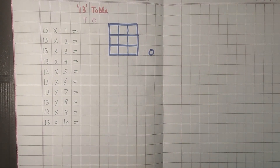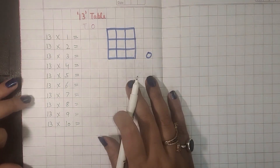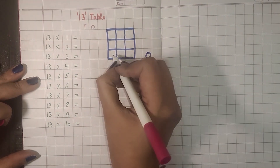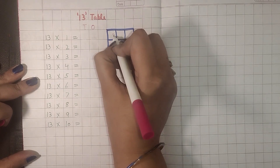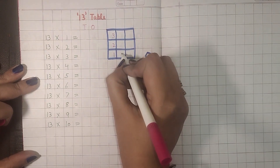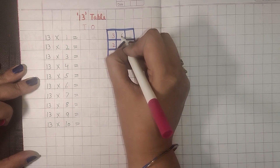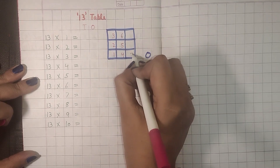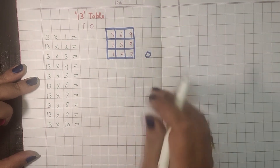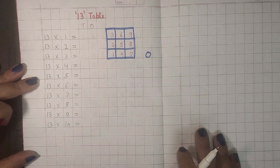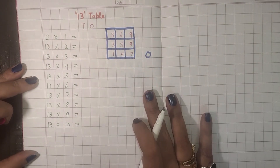We write the numbers 1 to 9 in the grid cells: 1, 2, 3, 4, 5, 6, 7, 8, and 9. This fills in the ones digit for the entire 13 times table.